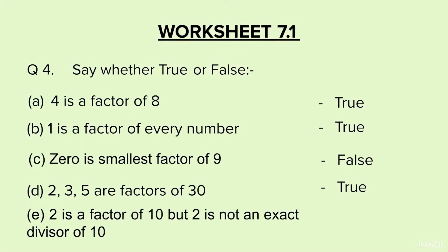E: 2 is a factor of 10, but 2 is not an exact divisor of 10. We discussed in properties that if a number is a factor, it will also be an exact divisor. So if 2 is a factor of 10, 2 will also be an exact divisor. The statement says it is not a divisor, so this is False. This brings us to the end of the worksheet. Until we meet again, stay happy and keep learning.